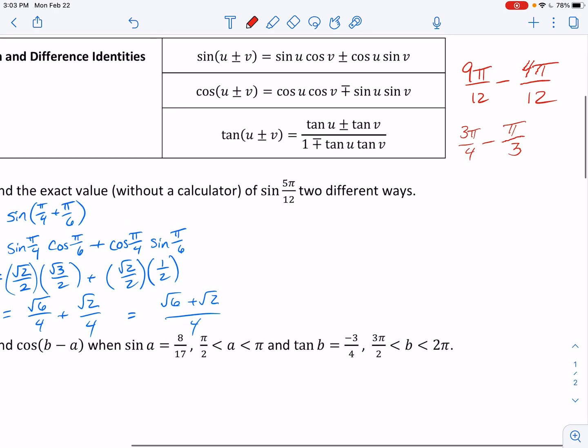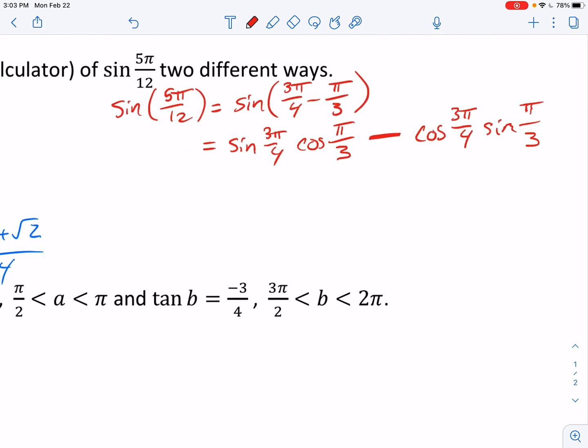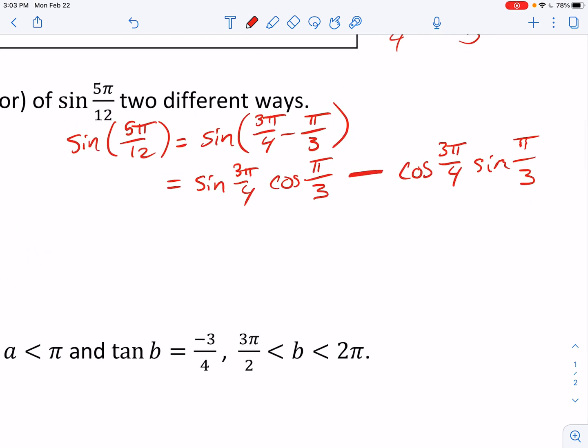We can say sine of 5 pi over 12 is equal to sine of 3 pi over 4 minus pi over 3, which is equal to sine cosine the same SIGN minus cosine sine. Okay, here we go. Sorry, let's try that again. Sine of 3 pi over 4, that is in, where is that one? So all of this you have to know, but sine of 3, so 3 pi over 4 is here, pi over 3 is here.